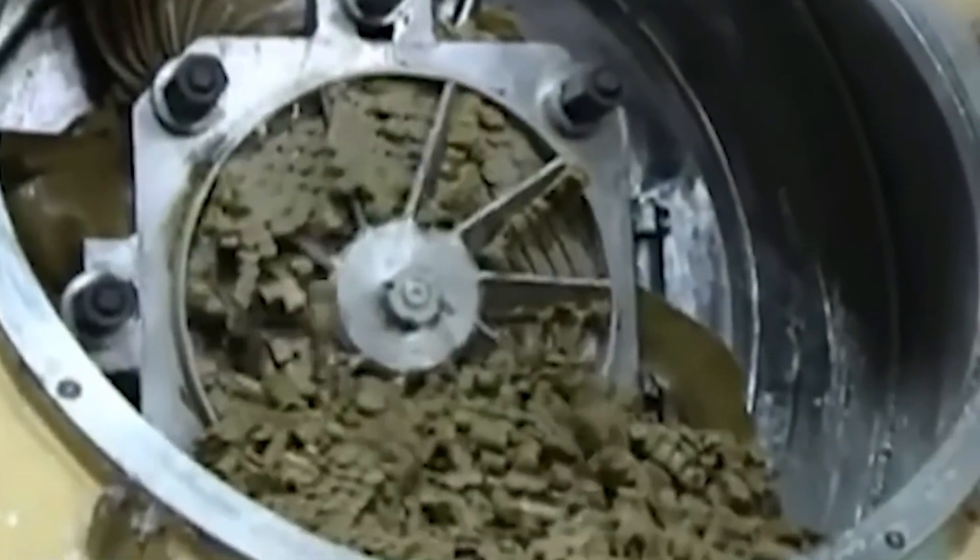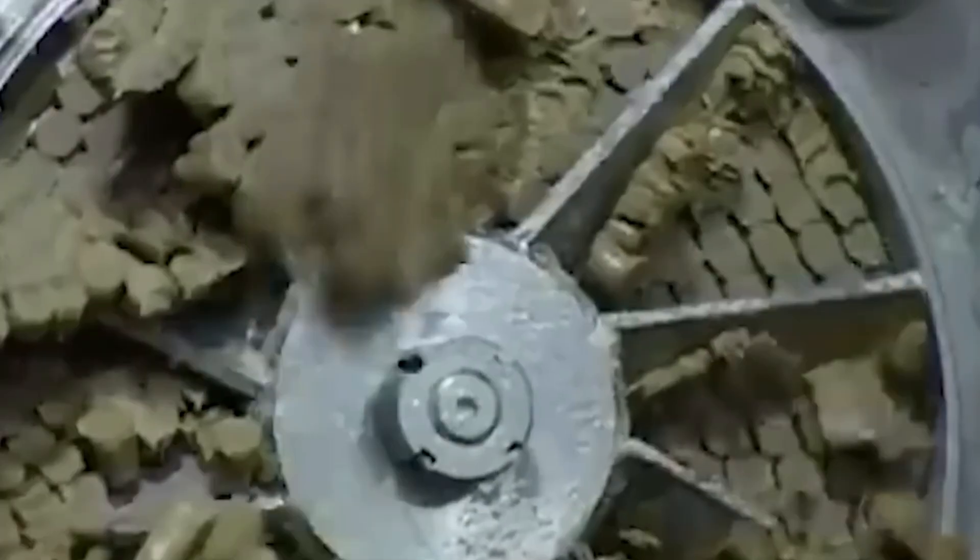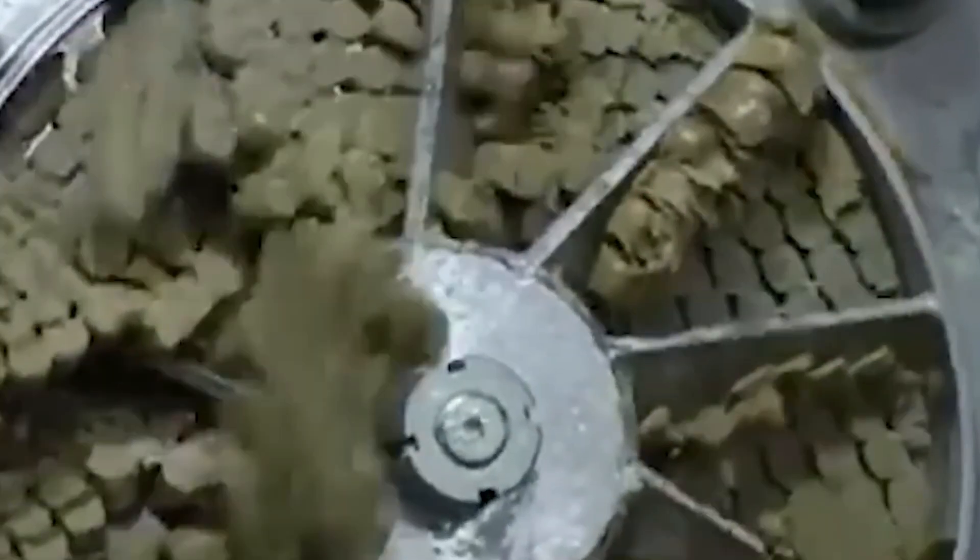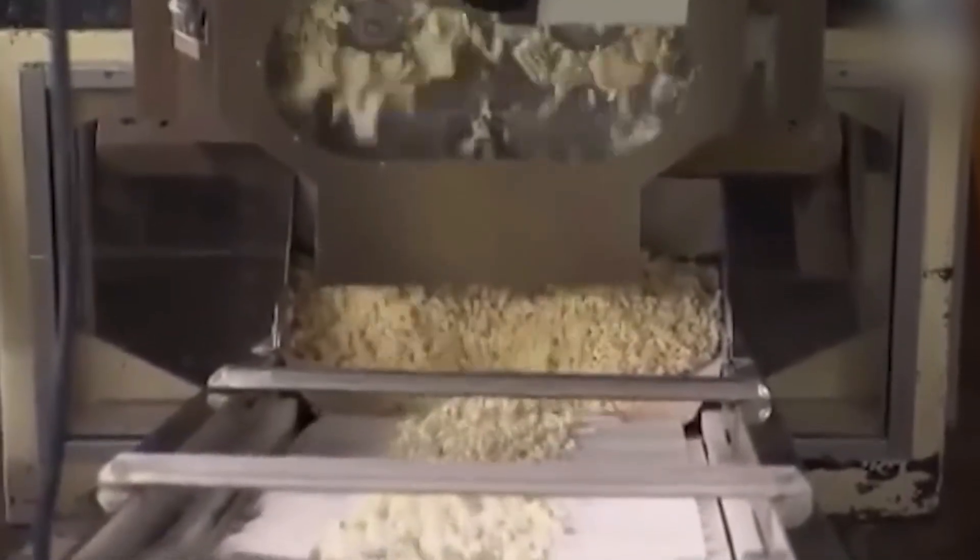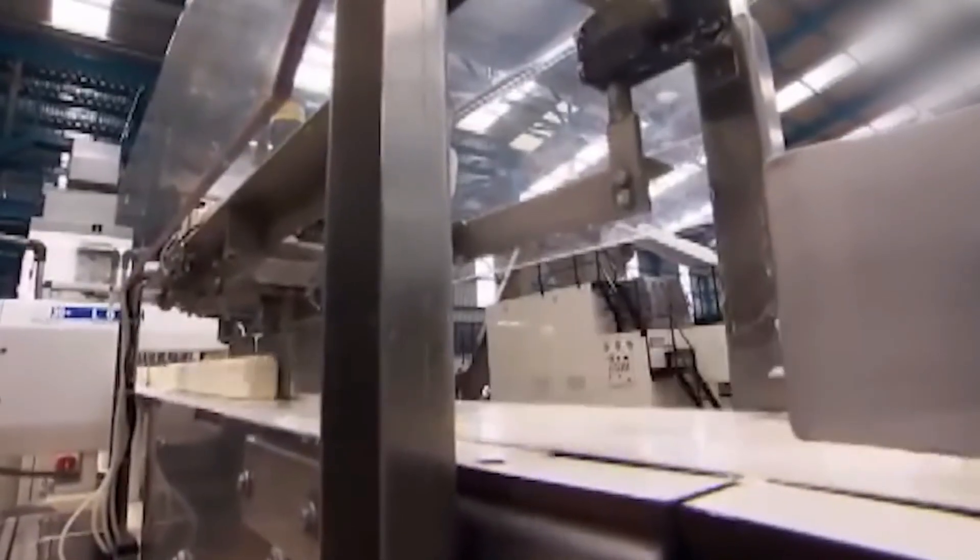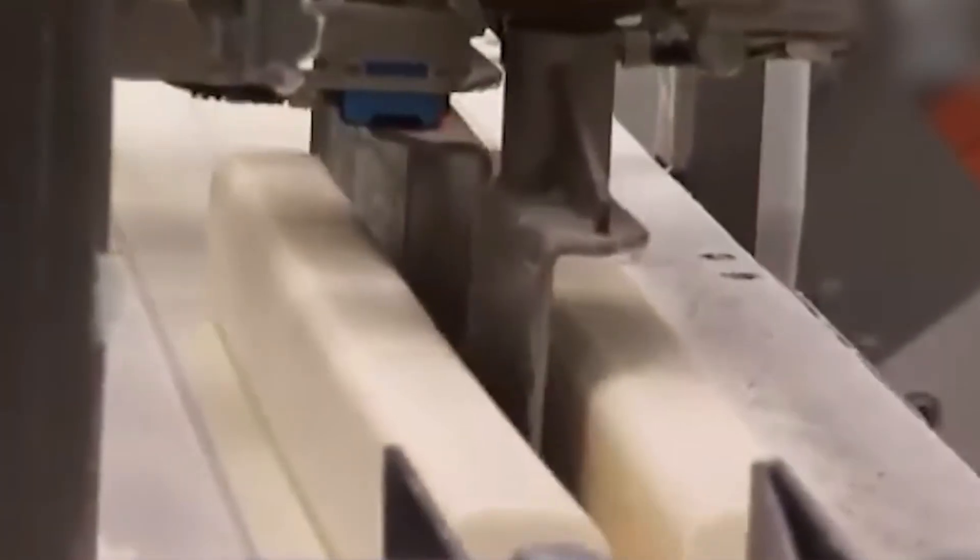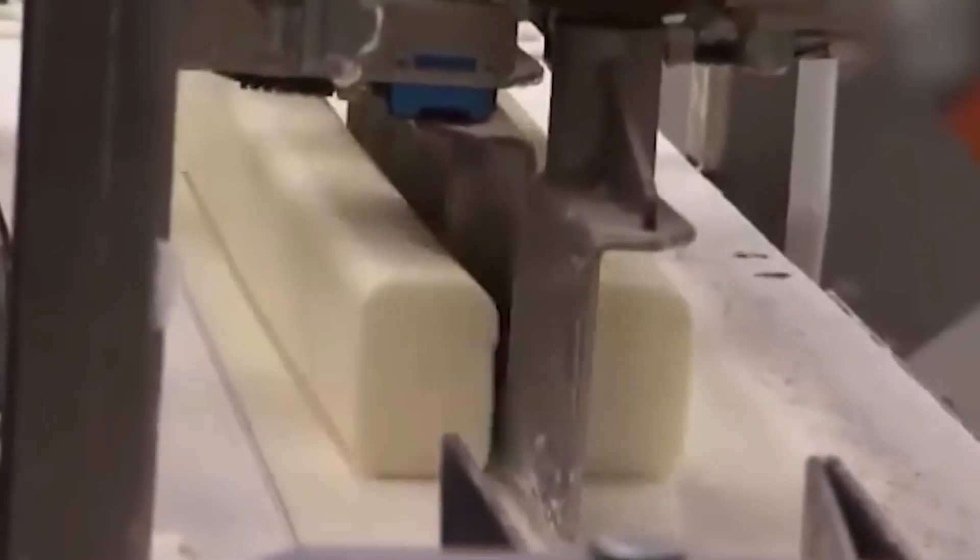At this stage, the soap looks like soft pasta—pliable, silky, and slightly warm to the touch. And that's exactly what it becomes. It's then forced through a perforated metal mold known as a noodle plate, emerging on the other side as neat, uniform strands called soap noodles—the perfect foundation for crafting high quality, luxurious bars.